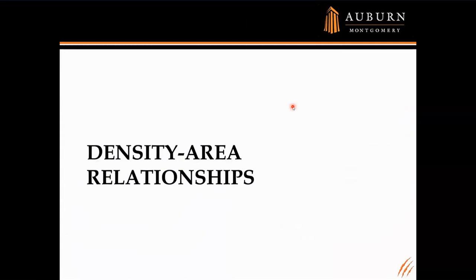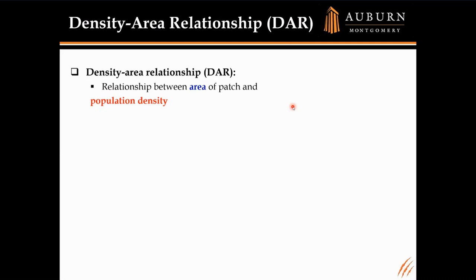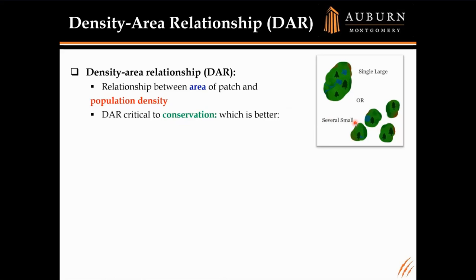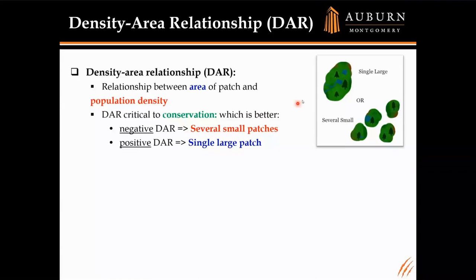Let me start by defining what a density-area relationship is — that's just the relationship between the area of a patch and population density. DAR is critical to conservation. If we only have a finite amount of land for conservation, do we put it all together in one big patch or break it up into smaller patches? A negative DAR means larger areas have smaller density, favoring small patches. A positive DAR means we'd want a single large patch.